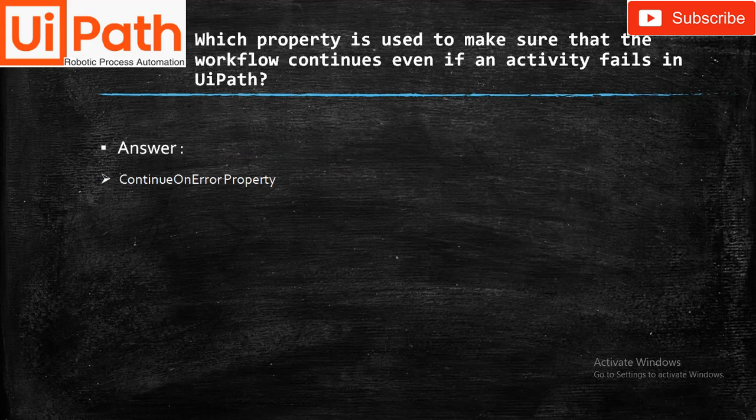Which property is used to make sure that the workflow continues even if an activity fails in UiPath? Answer: The ContinueOnError property.